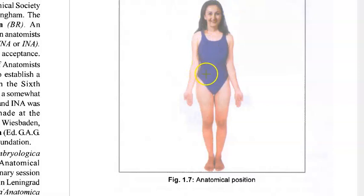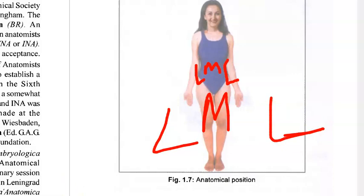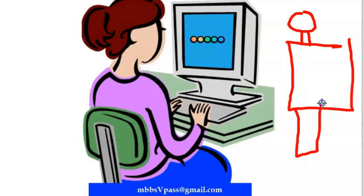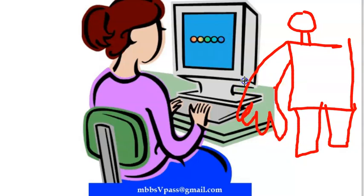Medial means towards the middle, and lateral means towards the outside. In the anatomical position, the thumb is lateral and the little finger is medial — this applies to both right and left hands.